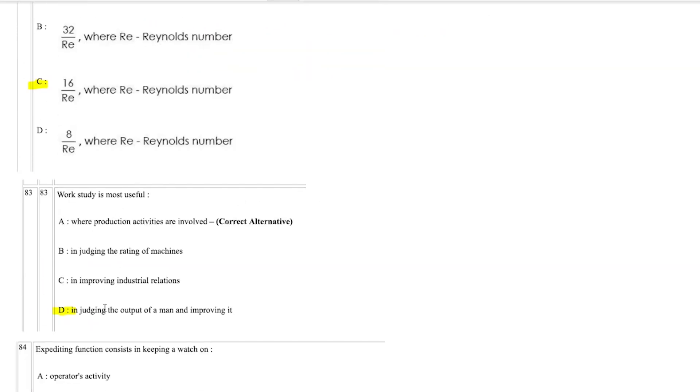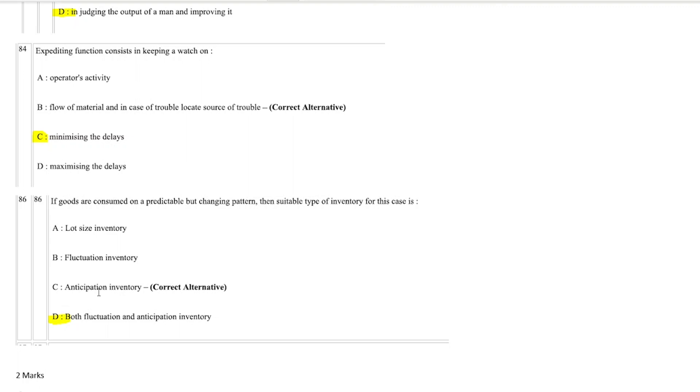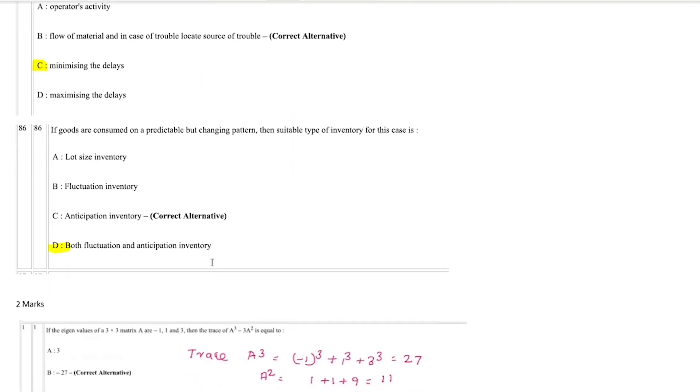If you look at work study, the answer D is changed. For expectation, you can minimize the delay, so question 84 is changed. Question 86 is anticipation inventory, but both fluctuation and anticipation inventory. This is one more question in the revisions.